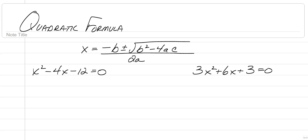So you have your a, b, and c. You should remember that the standard form is ax squared plus bx plus c. So in this first equation, our a value is 1, our b value is negative 4, and our c value is negative 12.